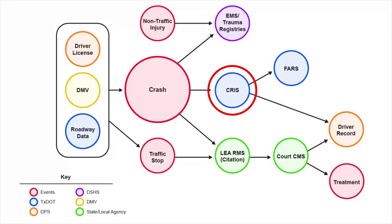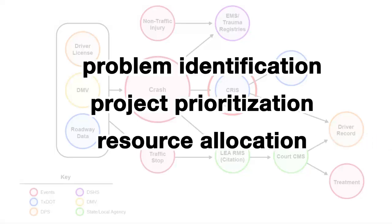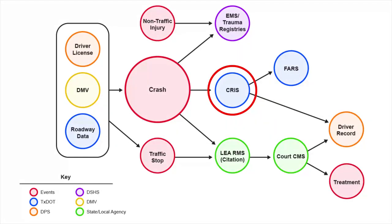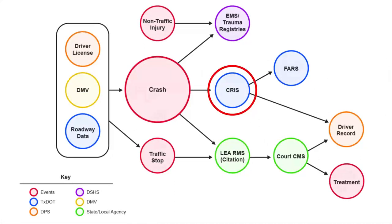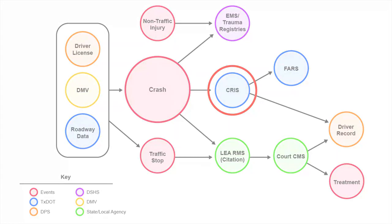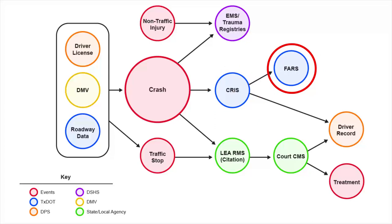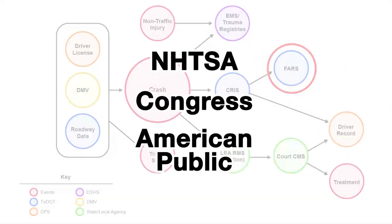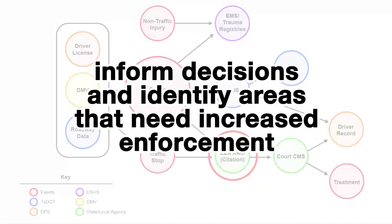CRIS is the central repository for crash records. Crash data is used by many traffic safety stakeholders to conduct problem identification, project prioritization, and resource allocation. Problem identification is conducted for the Highway Safety Plan. The crash analysis and visualization tool is used to enhance the process of selecting safety projects to submit for HSIP funding consideration. Many law enforcement agencies are using data-driven strategies to make decisions on staffing and scheduling, which includes using crash data. CRIS data flows into the Fatality Analysis Reporting System, which is a nationwide census providing NHTSA, Congress, and the American public yearly data regarding fatal injuries suffered in motor vehicle traffic crashes. Crash data also flows into each law enforcement agency's own record management system that houses their agency data. Agencies use this data to inform decisions and identify areas that need increased enforcement.